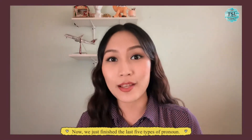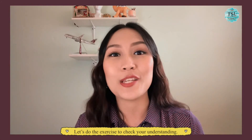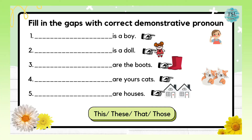Now we just finished the last five types of pronouns. Let's do the exercise to check your understanding. Let's try demonstrative pronoun — complete with this, that, these or those. Number one: that is a boy. Number two: this is a doll. Number three: these are the boots. Number four: those are your cats. And last one: these are houses.